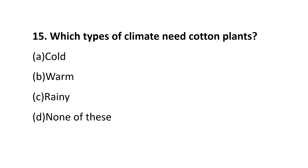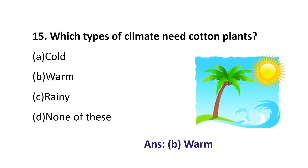Question number 15. Which type of climate do cotton plants need? Option A, Cold climate; Option B, Warm climate; Option C, Rainy climate; Option D, None of these. The answer is Warm climate. So, cotton plants need a warm climate for their growth.